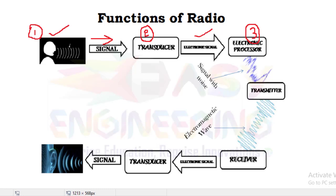Once the electrical signal is produced, it is fed into the next block, which is the electronic processing session. We have a number of signal processing functions that happen in that area. The information source signal is converted to another format through an encoding process. We use encoding techniques in the transmitter session. After encoding, we need to carry the information from the transmitter side to the receiver side, so we use modulation — for example, frequency modulation or amplitude modulation.